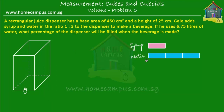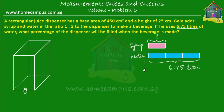Now we know that these 3 parts of water are equal to 6.75 litres. So if this is 6.75 litres, then what can we say about the quantity of syrup used? Well, the syrup is obviously a third of the water because there are 3 parts of water and only 1 part of syrup. So this unit over here is equal to a third of the quantity of water — that's a third of 6.75 litres.